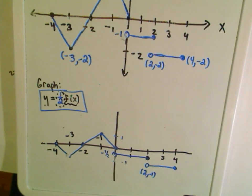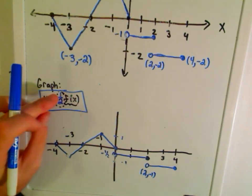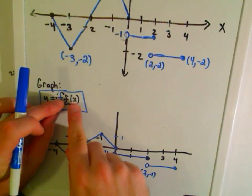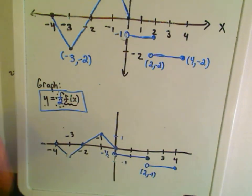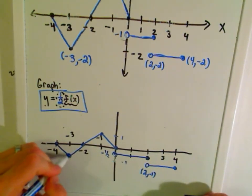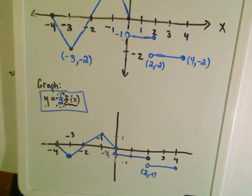I'll try to do the other transformations in another video — f(2x) where the two is inside, f(½x) where the one-half is inside, and reflections about the x and y-axis as well.